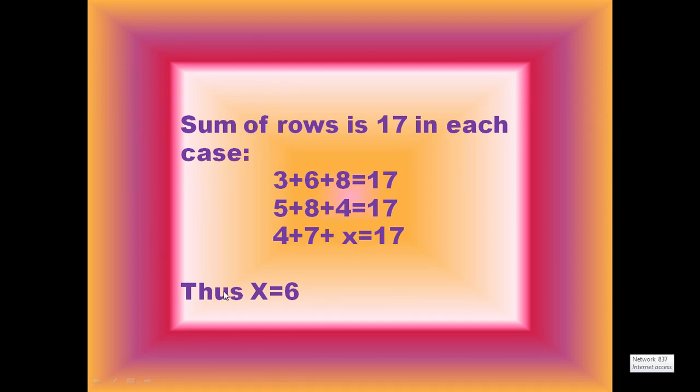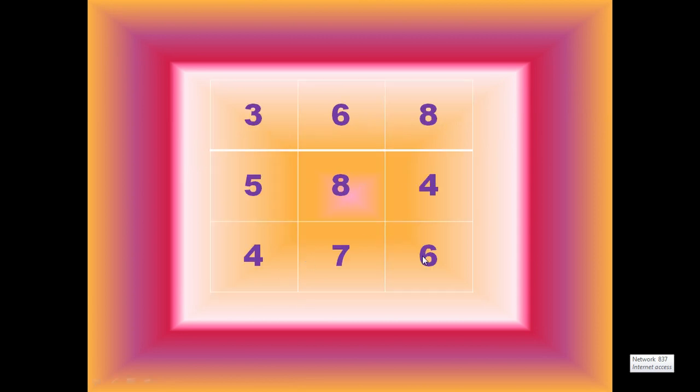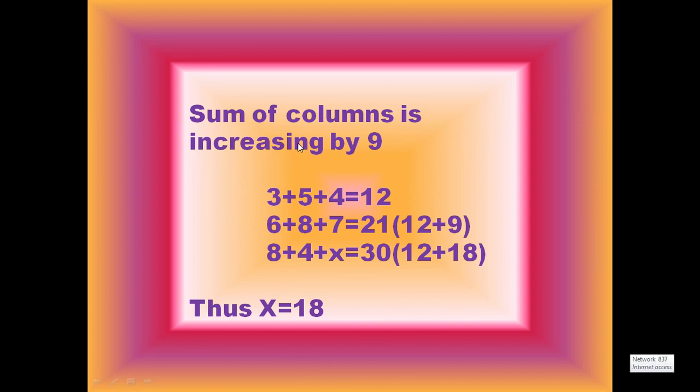This is one of the possible answers. Now I describe the second logic. Next, we sum the columns, which is increased by 9. That is, 3 plus 5 plus 4 equals 12.